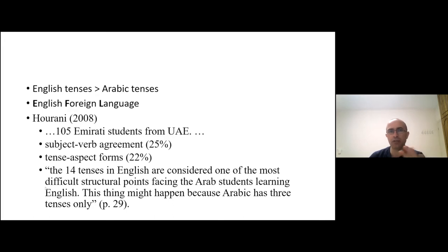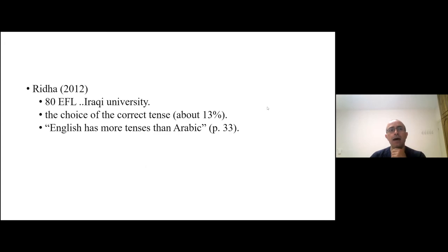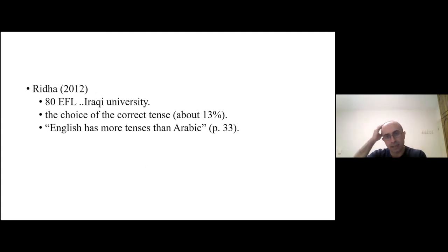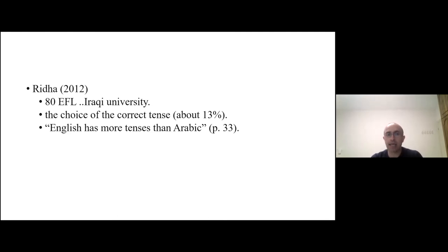He seems to allude to the idea that Arabic doesn't really have perfect tenses, or the equivalent of the English perfect tenses. Rida published an article in 2012, and talked about a study on 80 EFL students at an Iraqi university. He found that the most frequent errors were in the choice of the correct tense, and in explaining why, he says English has more tenses than Arabic.